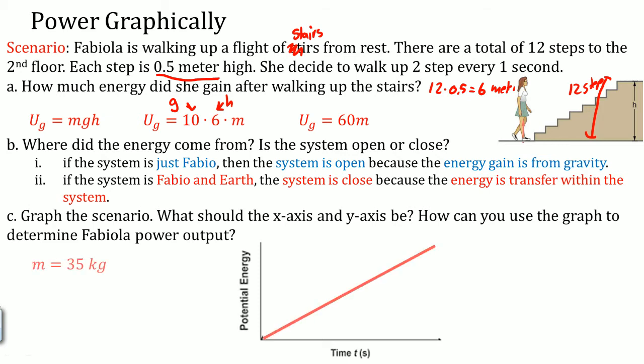Graph this scenario. What should be the x-axis and what should be the y-axis? Well, the x-axis should be time and the y-axis should be actually potential energy here. How can you use the graph to determine Fabiola's power output? We know that it all depends on her mass. So I'm going to give you three scenarios. This is her mass when it's at 35 kilograms. This is her mass, the green, if her mass is 40 kilograms. And this is her mass if it was at 45 kilograms. Notice her potential energy increases depending on her mass.